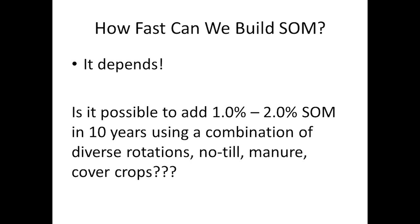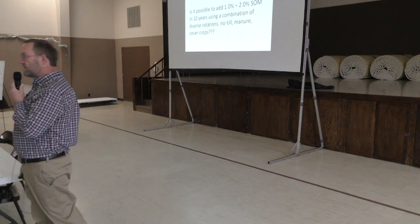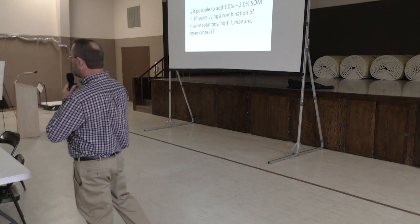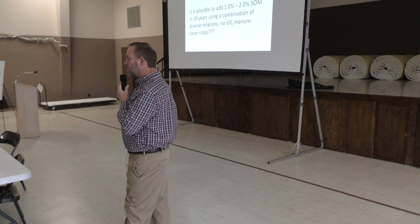How fast can we grow organic matter in our soils? The answer depends. Is it possible to expect 1 to 2% soil organic matter in a decade using a combination of diverse rotations, no-till, manure, and cover crops? I think it is, but you have to do everything right. Dan here says it's possible but you have to have all those things mixed together — and he does see an advantage where he uses manure on part of his operation.